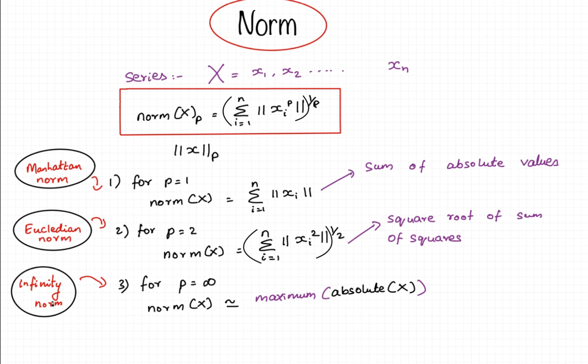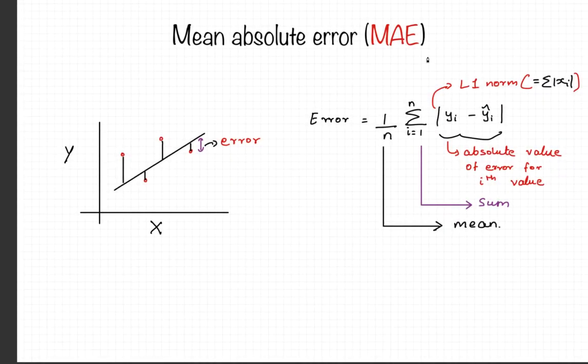The infinity norm, where the value of p is too large. Once you take the summation and take the value root of p, what you get back is the absolute value of the highest term of x.